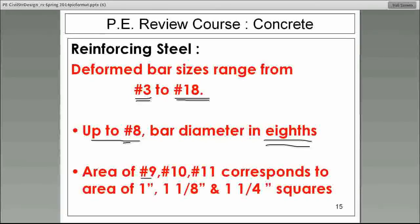But the area of a number nine is equal to a corresponding square of one by one. Number nine has an area that's equal to a square of one by one. So what's the area of a number nine bar? One square inch.